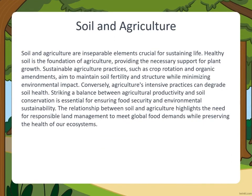Soil and agriculture are inseparable elements and crucial for sustaining life. Healthy soil is the foundation of agriculture, providing the necessary support for plant growth. Sustainable agriculture practices such as crop rotation and organic amendment aim to maintain soil fertility and structure while minimizing environmental impact. Agriculture's intensive practices can degrade soil health, so striking a balance between agricultural productivity and soil conservation is essential for ensuring food security and environmental sustainability. The relationship between soil and agriculture highlights the need for responsible land management to meet global food demand while preserving the health of our ecosystems.